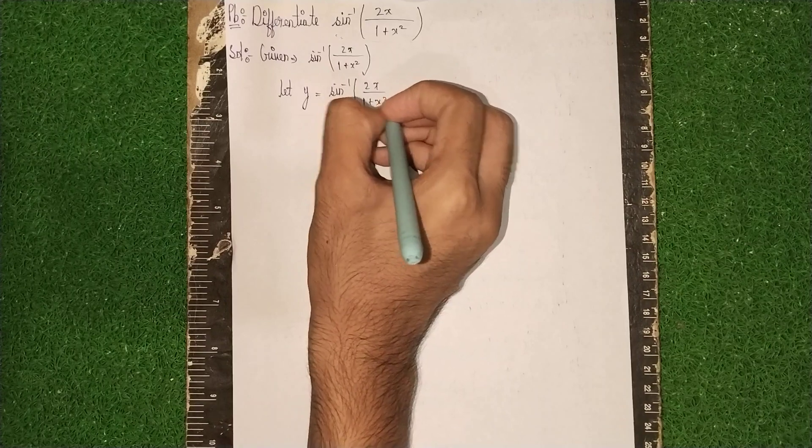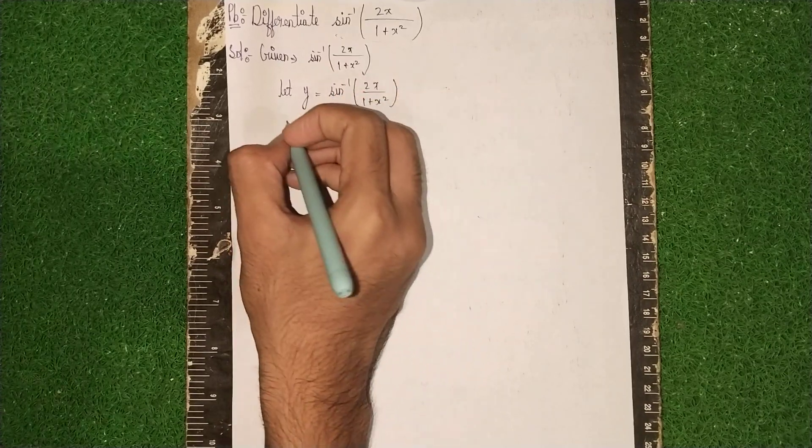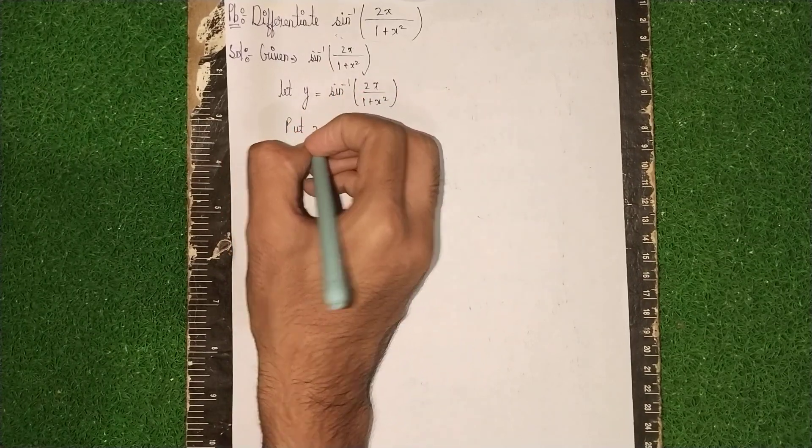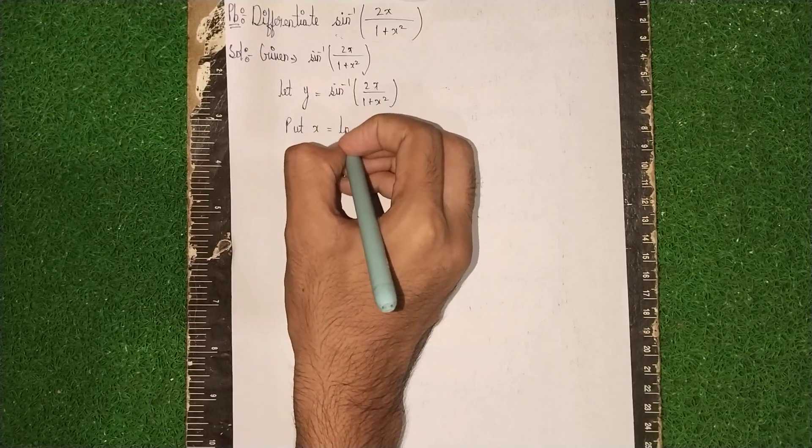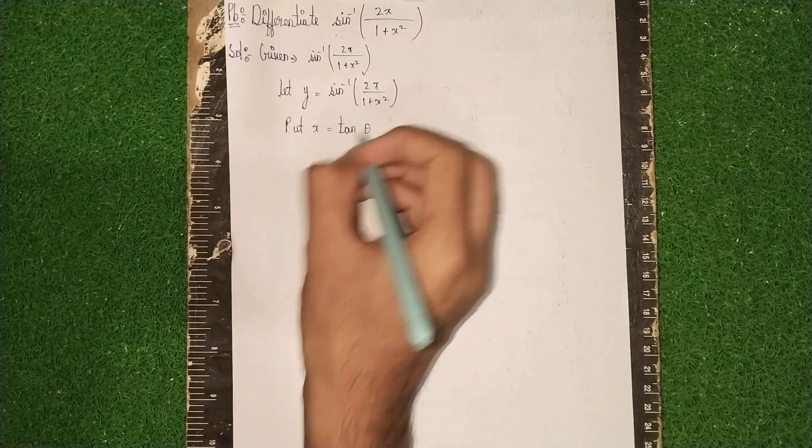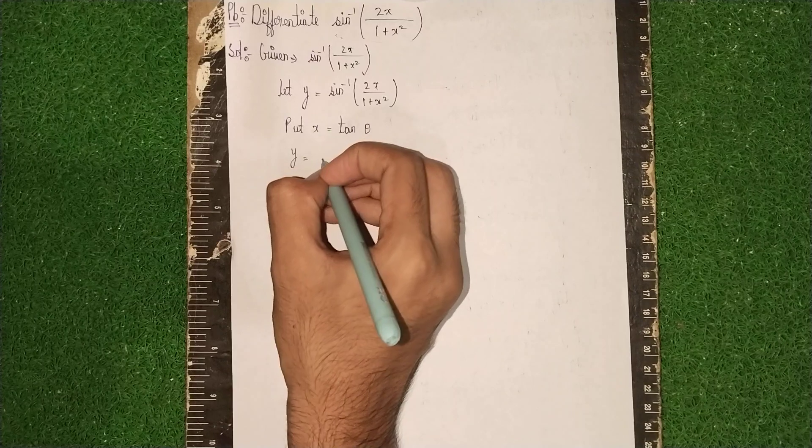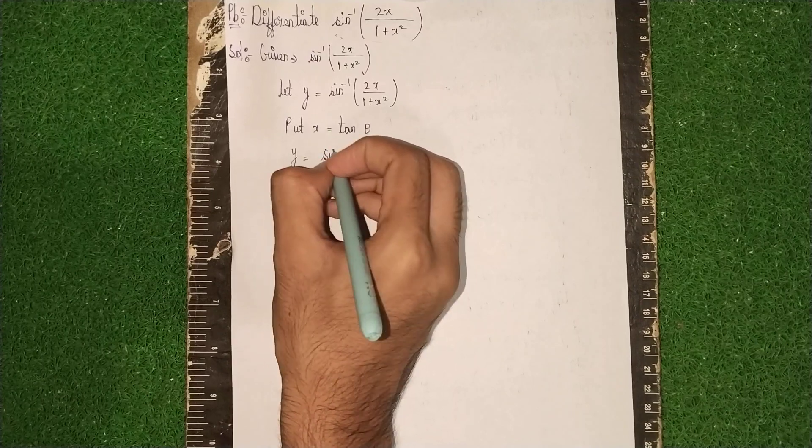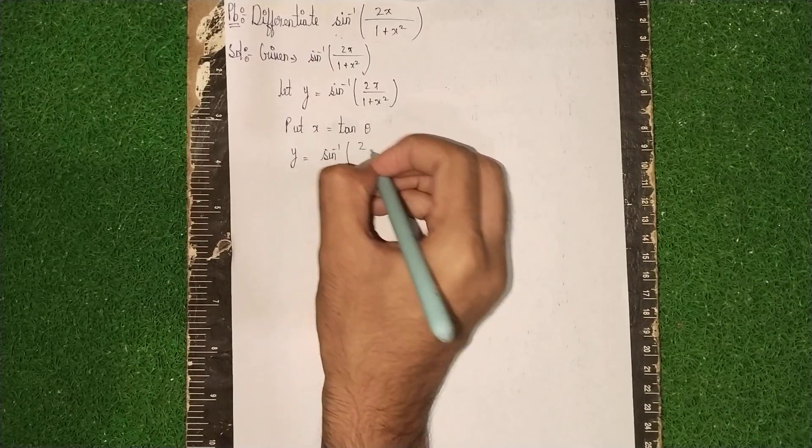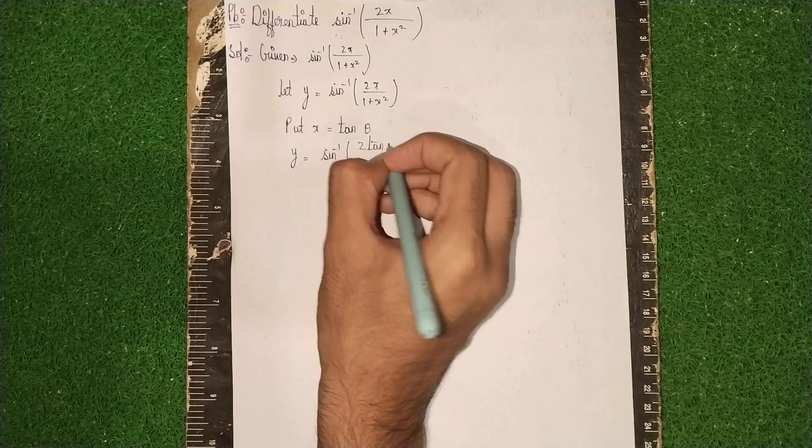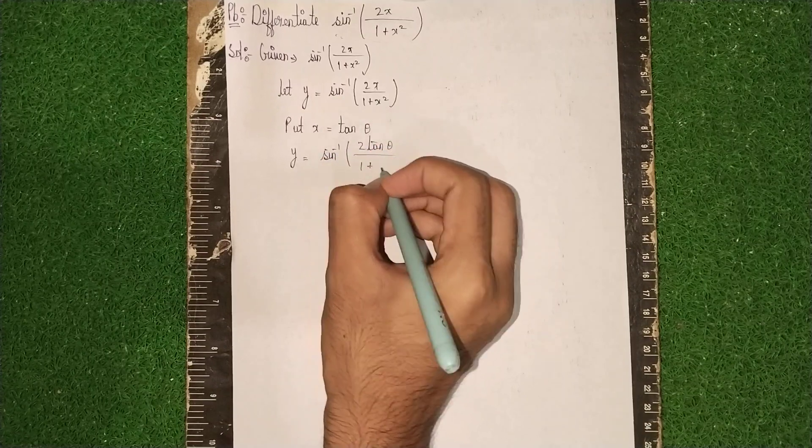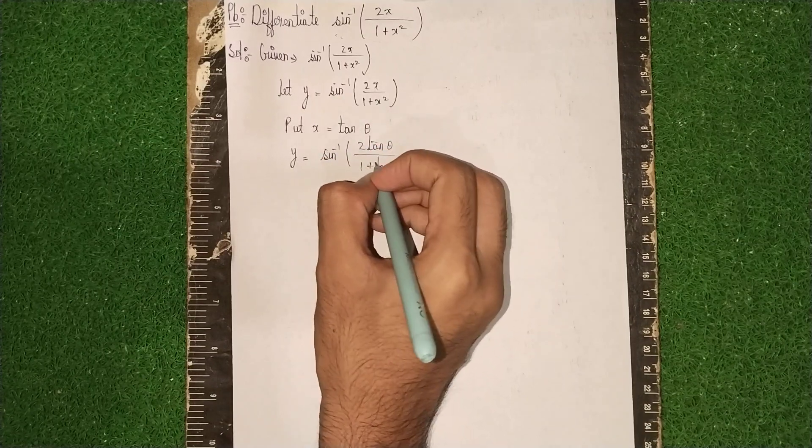Then, put x = tan θ. Why am I taking tan θ? This becomes y = sin⁻¹(2tan θ/(1+tan²θ)).